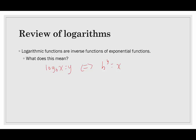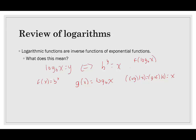So, if we were to look at F of X equals B to the X and G of X equals log base B of X, and what we know is that B is greater than 0 and B does not equal 1. What this means, that they're inverses, is that if we did the composite function F of G of X, this would equal the composite function G of F of X, which would equal X. And just to verify that, F of G of X would be F of log base B of X. And then I would take log base B of X and substitute it in anywhere I see X in F, which would give me B to the log base B of X.